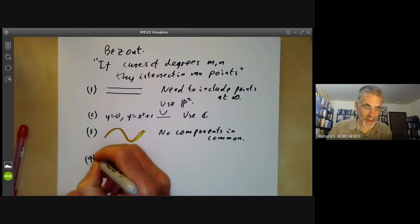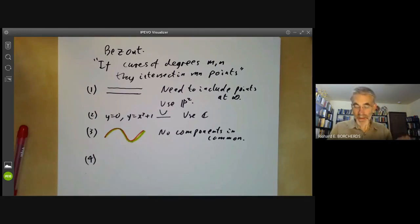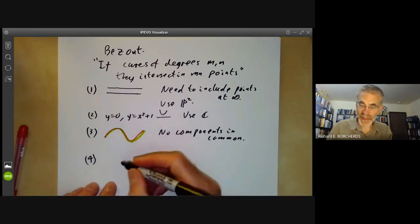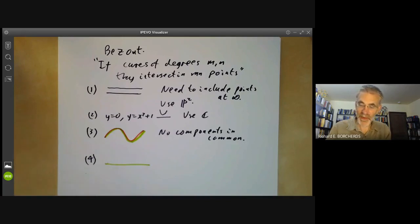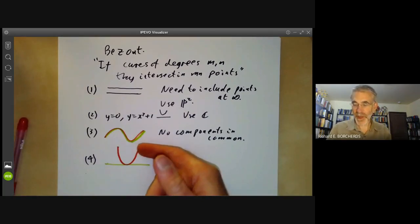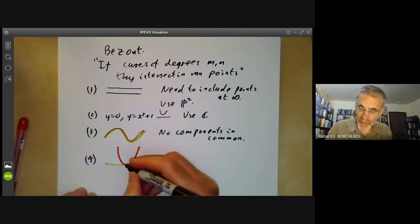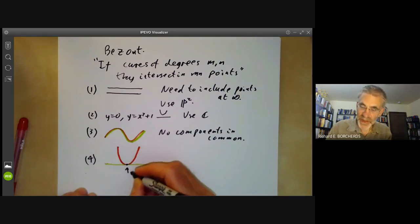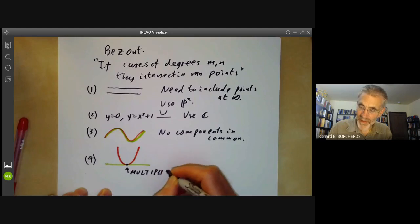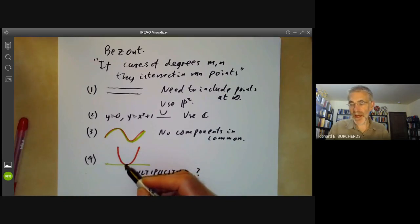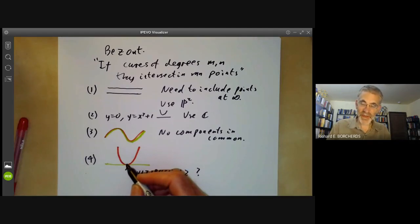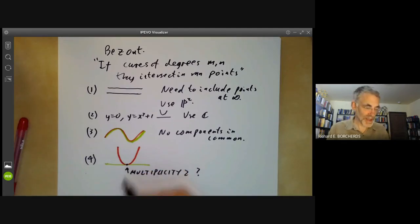A fourth problem is that points may have multiplicities, and there are several ways this can happen. For example, if we take a line and try to intersect it with a parabola, it only has one intersection point, even though the parabola is degree two and the line has degree one. But you have to think of this as an intersection point of multiplicity two. If you deform this parabola very slightly, it meets the line at two points, so you should think of this as two points that just happen to be in the same place.